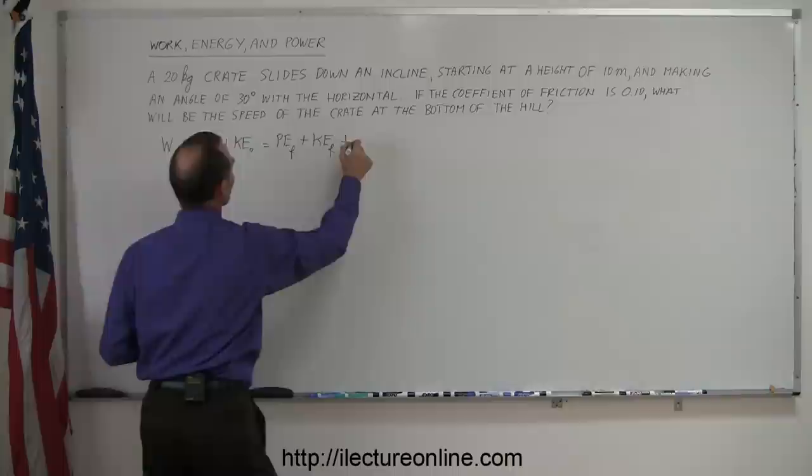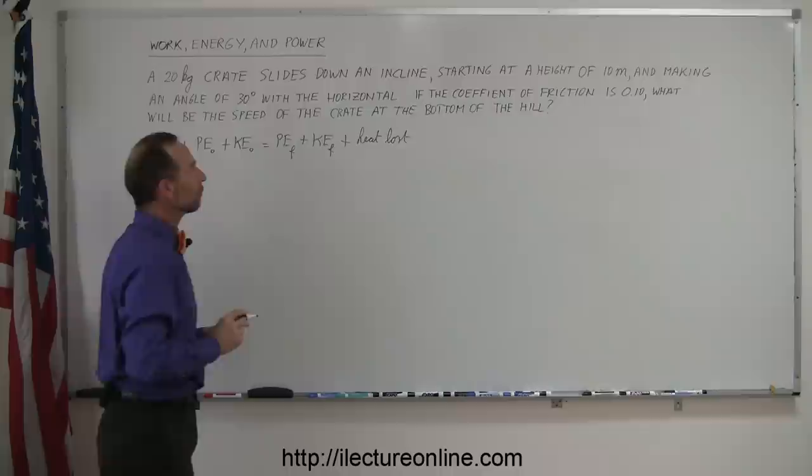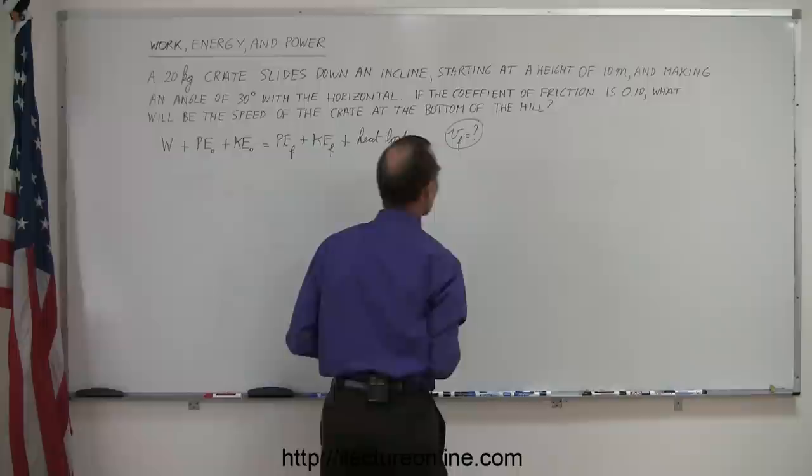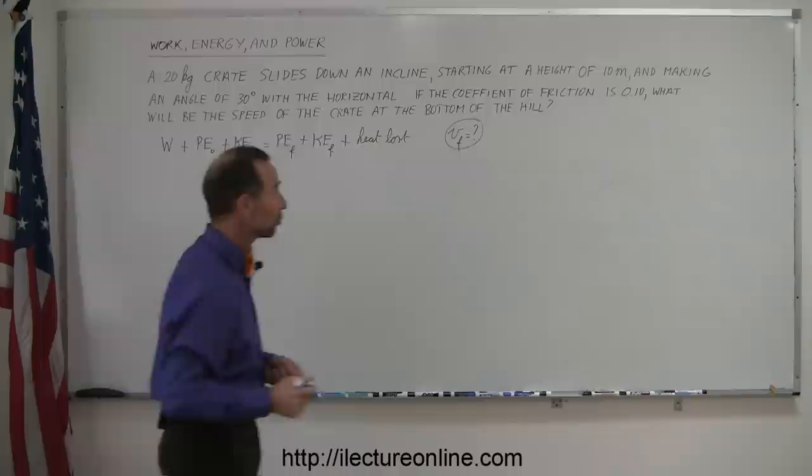Remember, what we're looking for is the velocity or speed at the bottom of the hill, so V final is equal to question mark — that's what we're after. To get a better visual picture of what's happening here, let's make a drawing, a sketch.